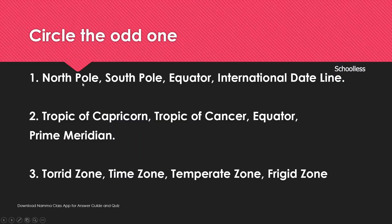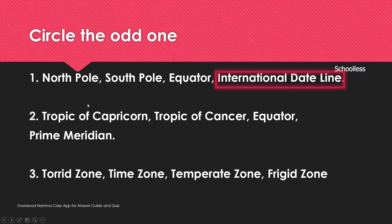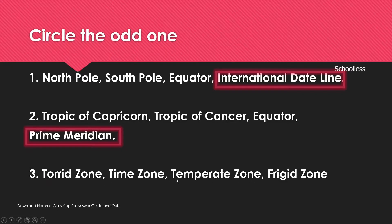Circle the odd ones: North Pole, South Pole, Equator — these are latitudes. The International Date Line is a longitude (vertical line), so it is the odd one. Tropic of Capricorn, Tropic of Cancer, Equator, and Prime Meridian — the first three are latitudes (horizontal lines) and the Prime Meridian is the vertical line, so Prime Meridian is the odd one.